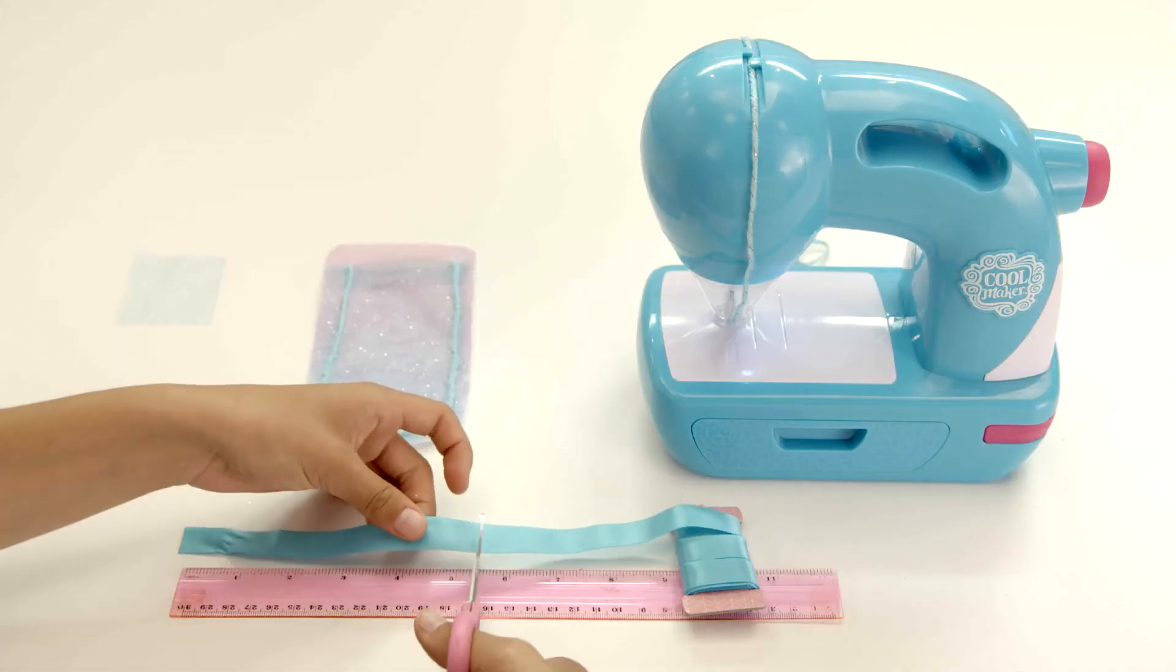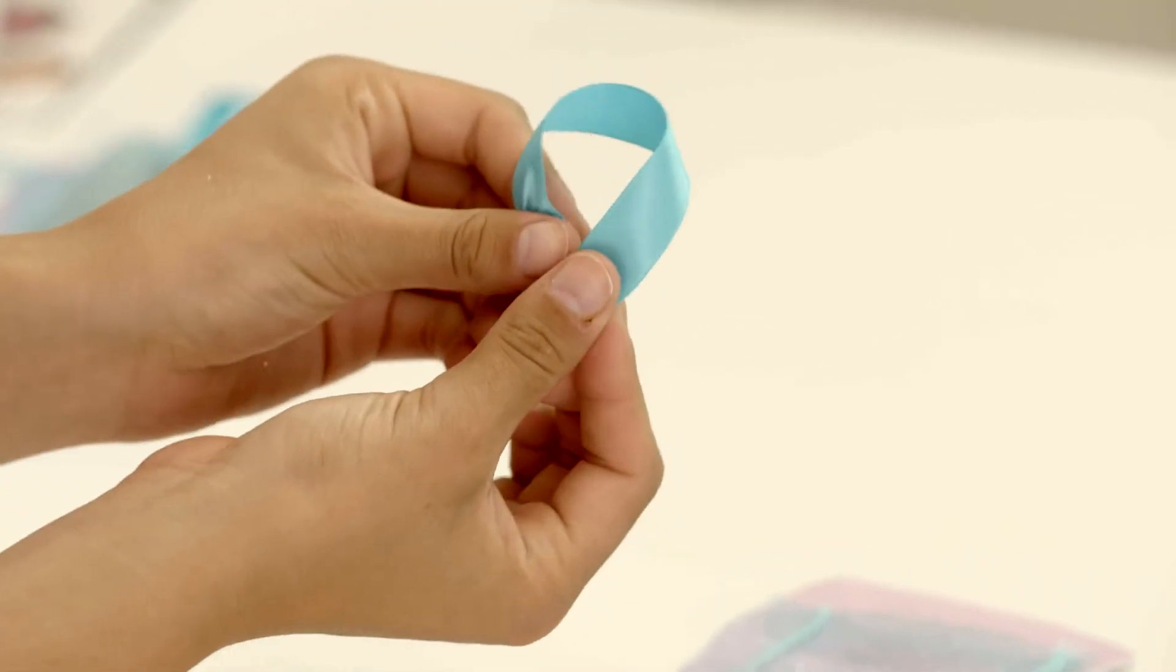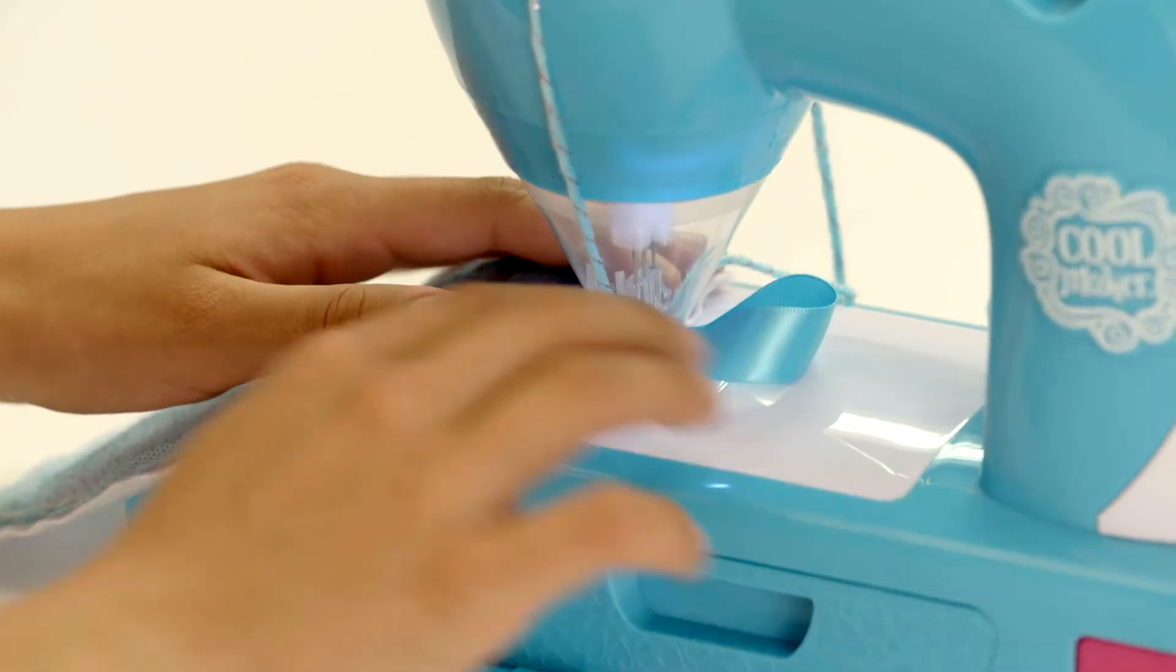Cut a 5 inch piece of ribbon for the loop handle and sew this on the top of the felt piece with style string.